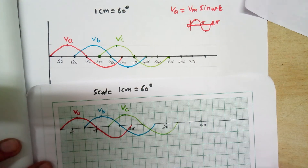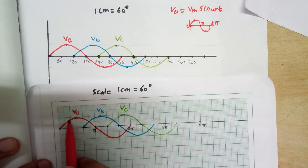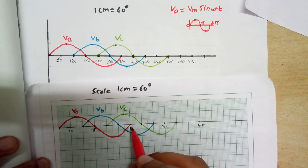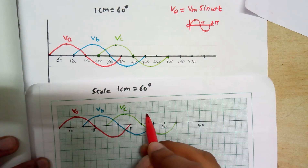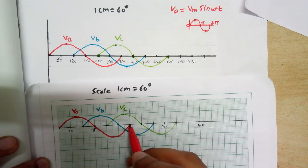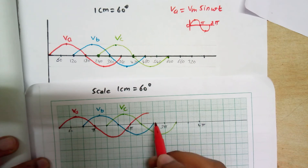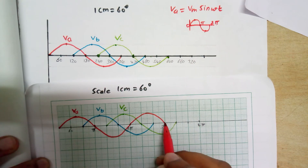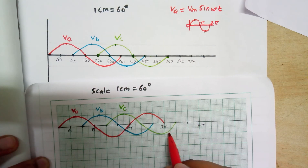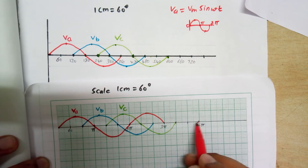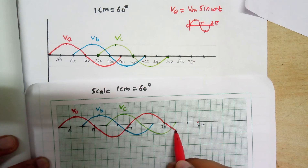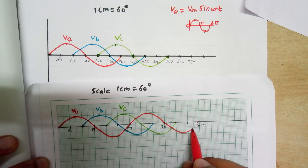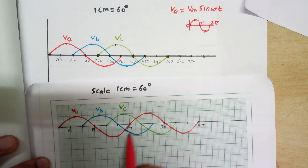Now we can complete the waveform of Va. After 1.5 cm there will be a peak value, then it will conduct for 180 degrees to the ending point. The peak value is at 1.5 cm, and the wave continues similarly for the next cycle. This is our Va.